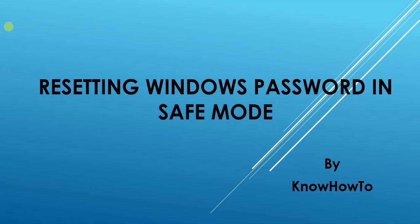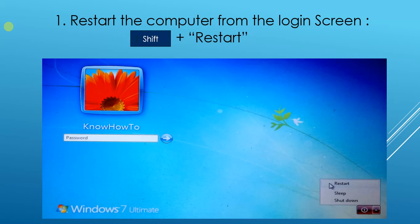Before starting, you need to know that there are two kinds of user accounts that Microsoft uses: the first one is Administrator account and the second is Standard account. To reset your password, you have to use your administrator account. Restart the computer from the login screen and press Shift plus Restart. Please note that you have to restart from the login screen — I have provided a screenshot in the video.